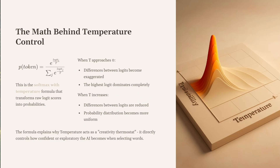For the technically curious, here's the formula: temperature T divides the logits before the softmax function turns them into the final probabilities. A lower temperature makes the differences in scores more extreme; a higher temperature makes them more even. You don't need to memorize it — just know that's the powerful mechanism at work.